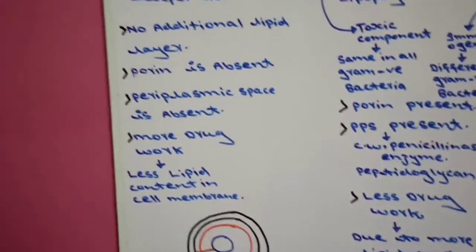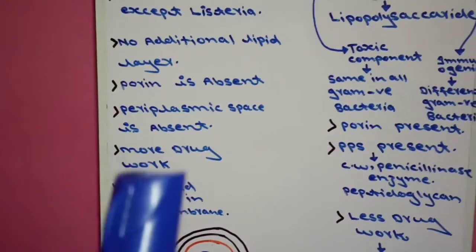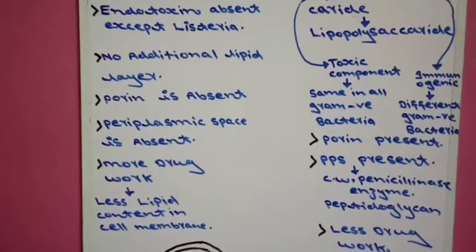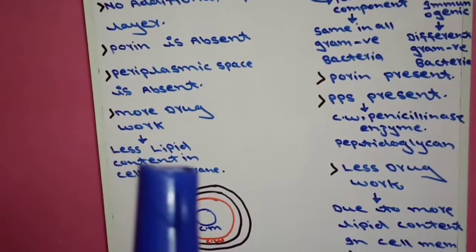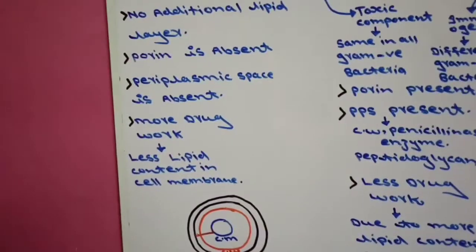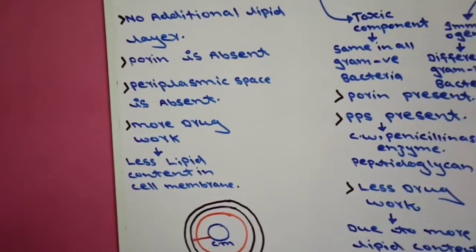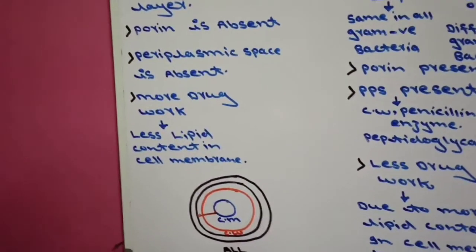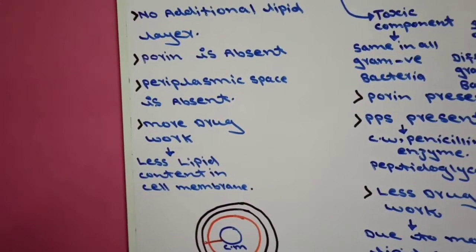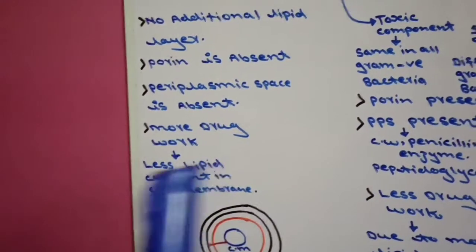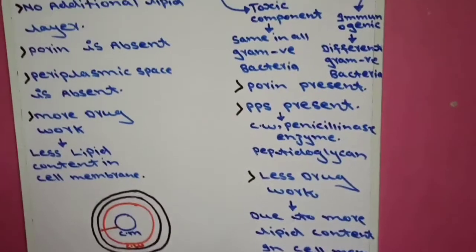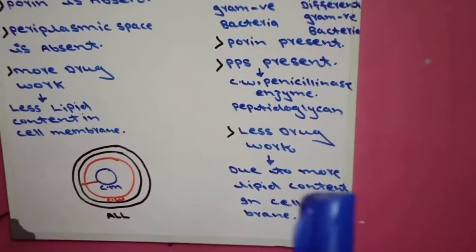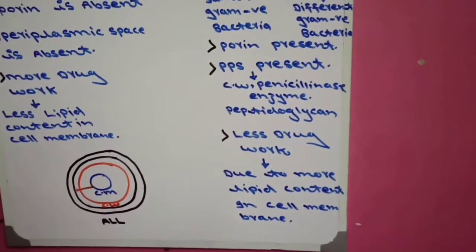The seventh and last difference: in gram positive bacteria, more drugs work. More drugs work on gram positive bacteria because there is less lipid content in the cell membrane, creating less of a barrier. In gram negative bacteria, less drugs work due to the additional lipid layer and more lipid content in the cell membrane.